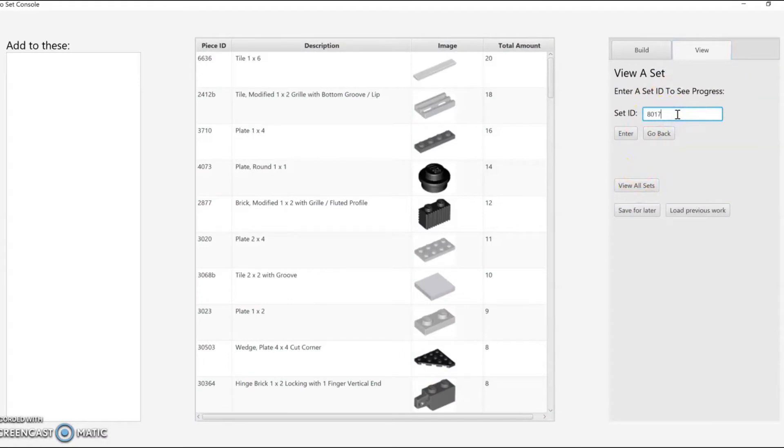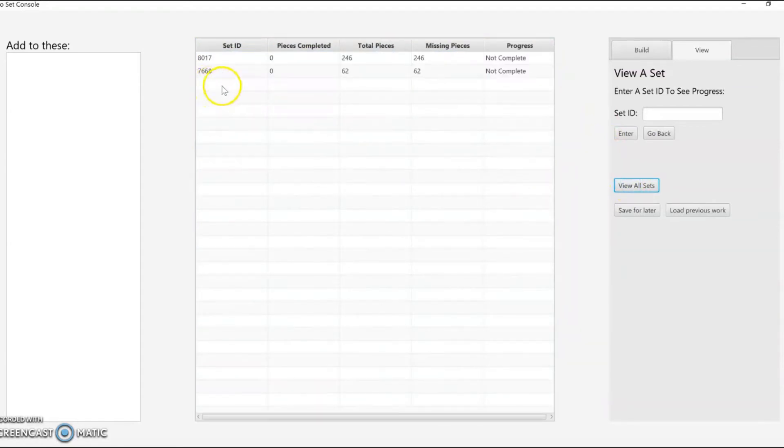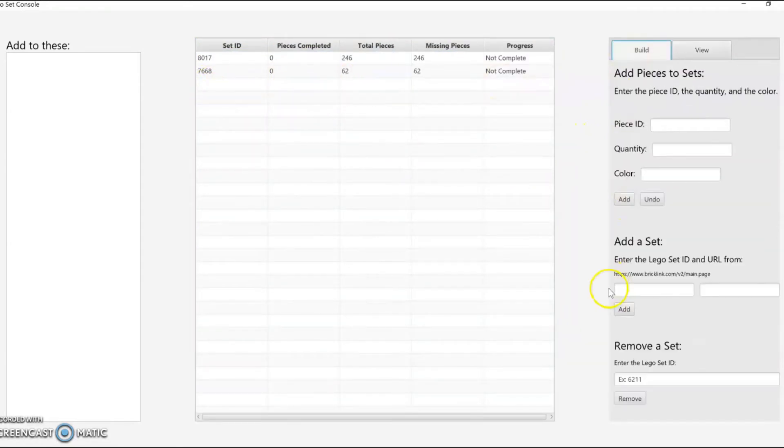I can view the progress of a specific set as well. When I do this, it displays the individual pieces and the progress for those pieces. I can also view all of the sets in the current session. I can also remove a set if I don't want to build it anymore, and the master list will be updated accordingly.